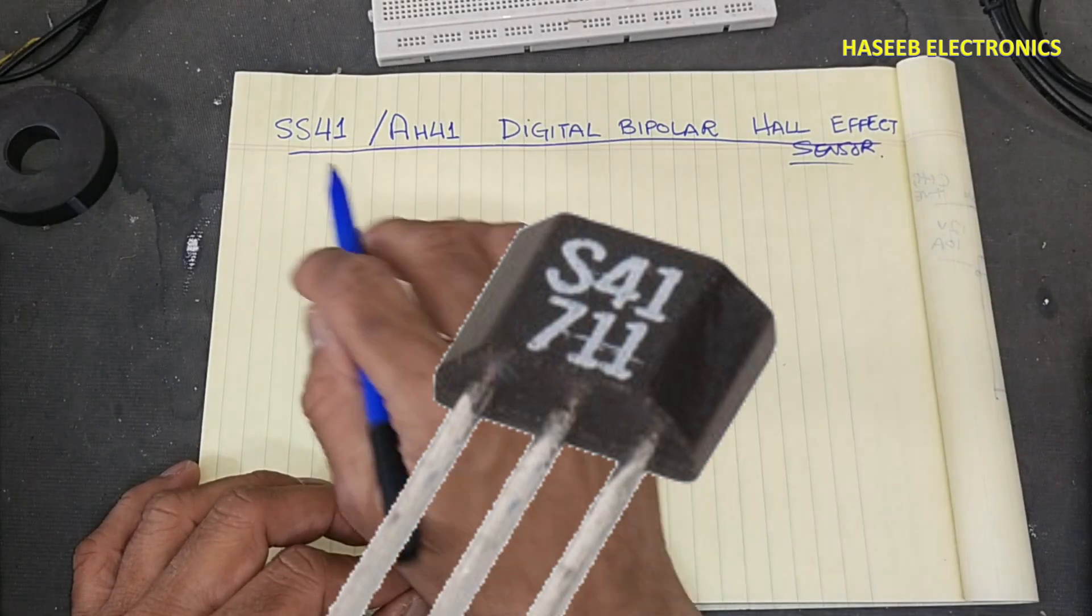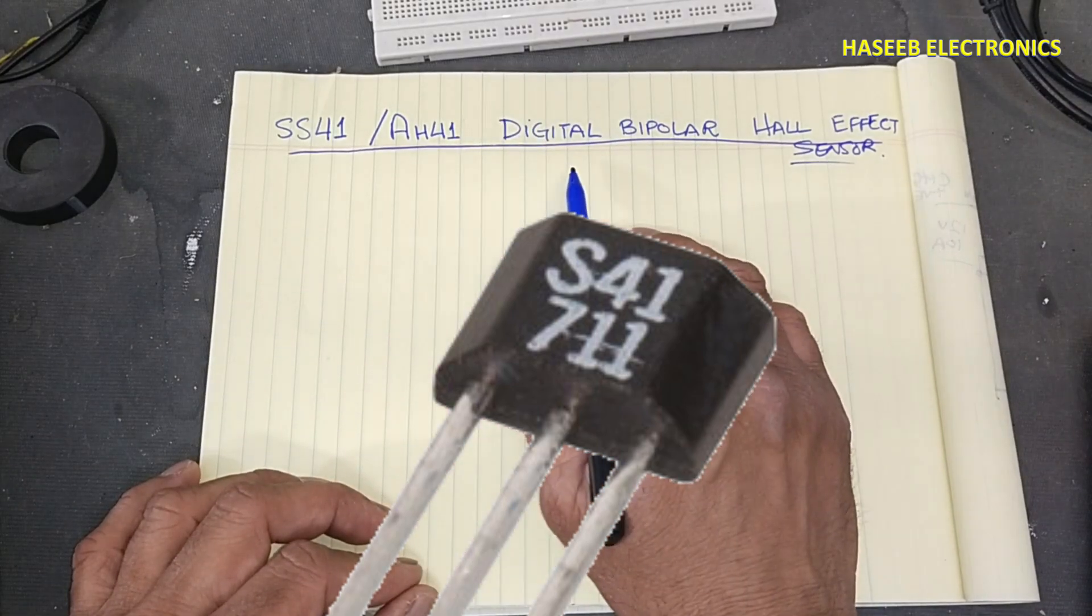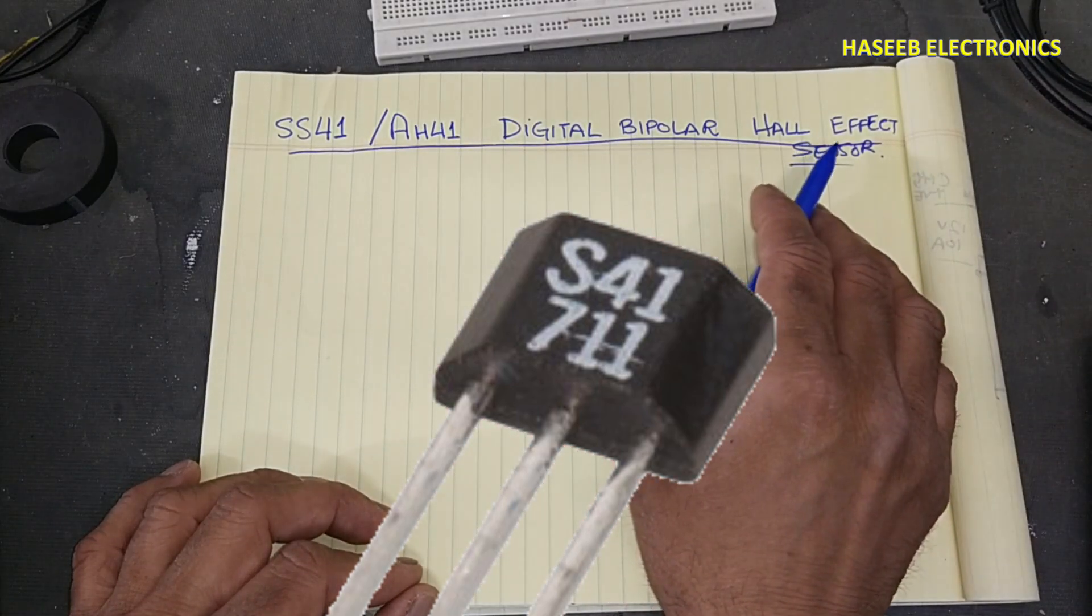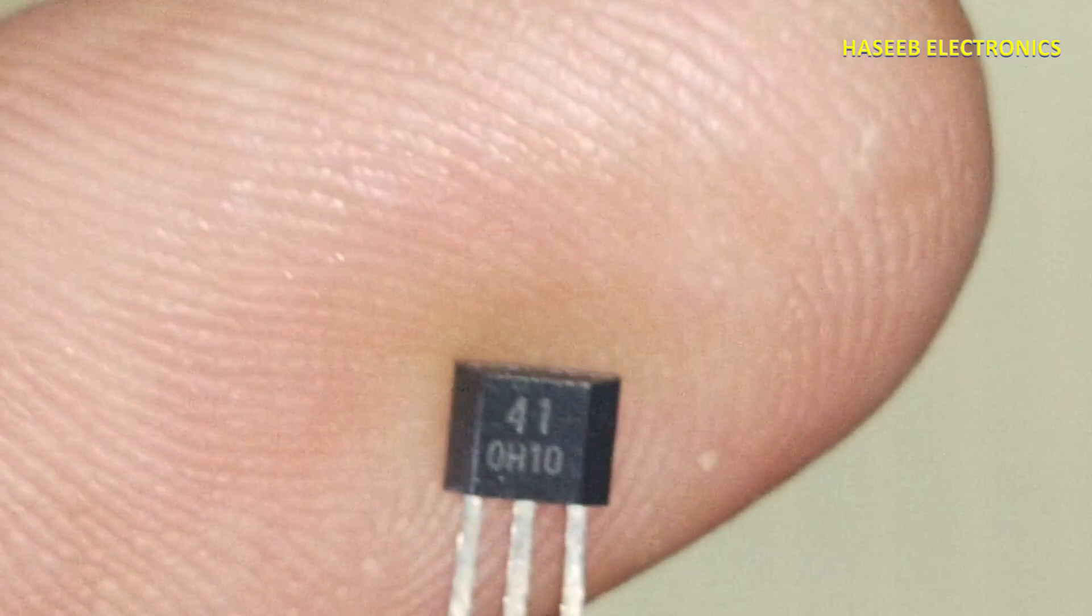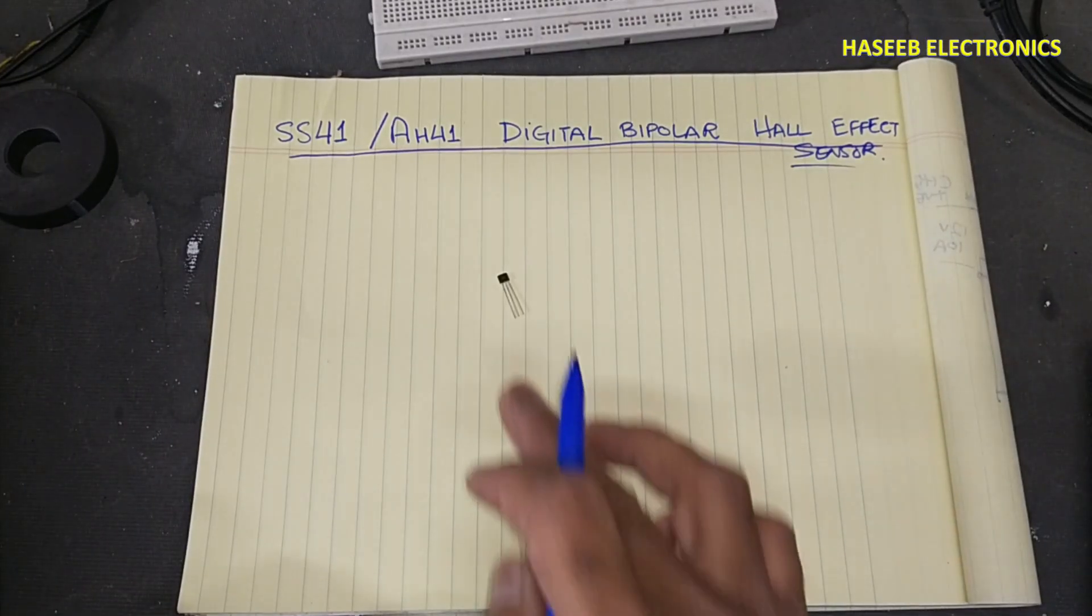Welcome back to my channel. Today we will discuss the SS41 or AH41 digital bipolar hall effect sensor. The part number is 41. It looks like a transistor but it is an IC that will sense magnetic poles and provide digital output.